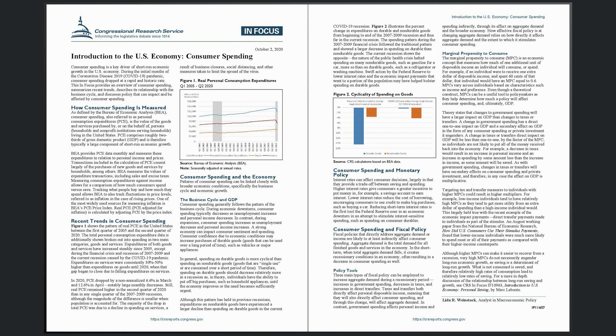The spending pattern during the 2007–2009 financial crisis followed the traditional pattern and showed a larger decrease in spending on durable than non-durable goods. The current recession shows the opposite — the nature of the public health crisis halted spending on many non-durable goods, such as gasoline for a car, more so than on durable goods, such as a refrigerator or washing machine. Swift action by the Federal Reserve to lower interest rates and the economic impact payments that went to a portion of the population may have helped bolster spending on durable goods. Figure 2: Cyclicality of Spending on Goods.